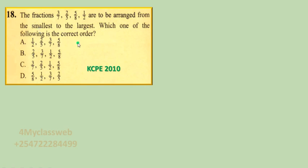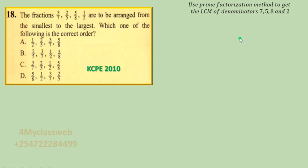As I explain this example, you need to realize that although we are going to arrange the fractions from the smallest to the largest, if it were largest to smallest you would do the opposite. Once you are given fractions like this, look at the denominators — in this case they are 7, 5, 8, and 2. To be able to do this, we shall look for the LCM of these four denominators using the method of prime factorization.